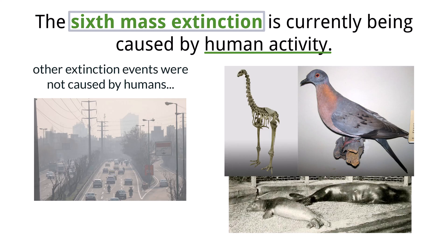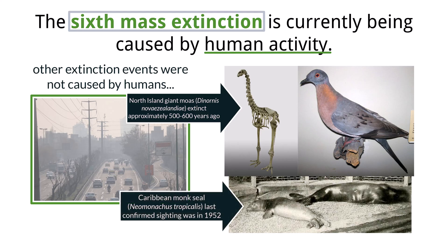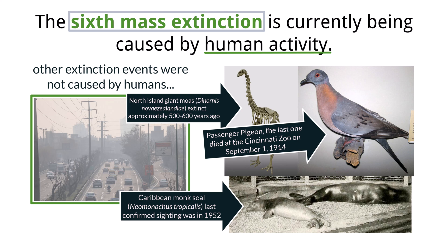This current crisis stems from our rapidly expanding global footprint and unsustainable practices. The extinction of the North Island giant moas, a colossal flightless bird from New Zealand, represents the loss of terrestrial megafauna primarily due to overhunting by early human settlers and habitat alteration. Similarly, the Caribbean monk seal was lost due to overexploitation for oil and meat by European colonists, alongside habitat disturbance. In North America, the passenger pigeon — once the most abundant bird — was driven to extinction by overhunting and habitat destruction as forests were cleared for agriculture and settlement.